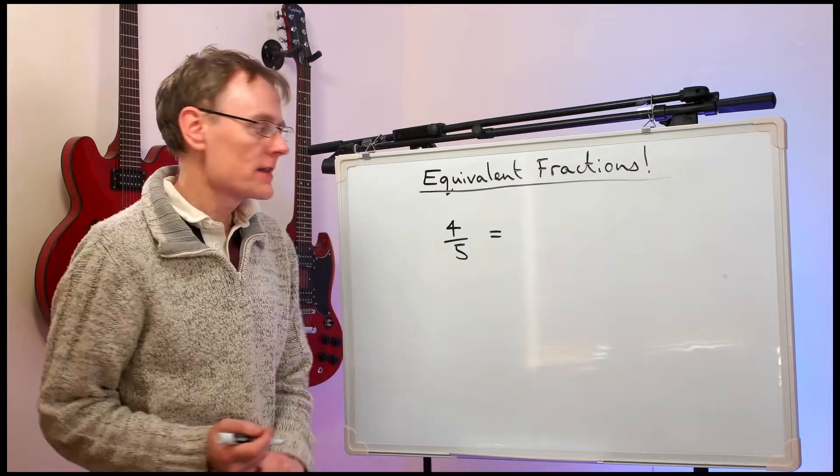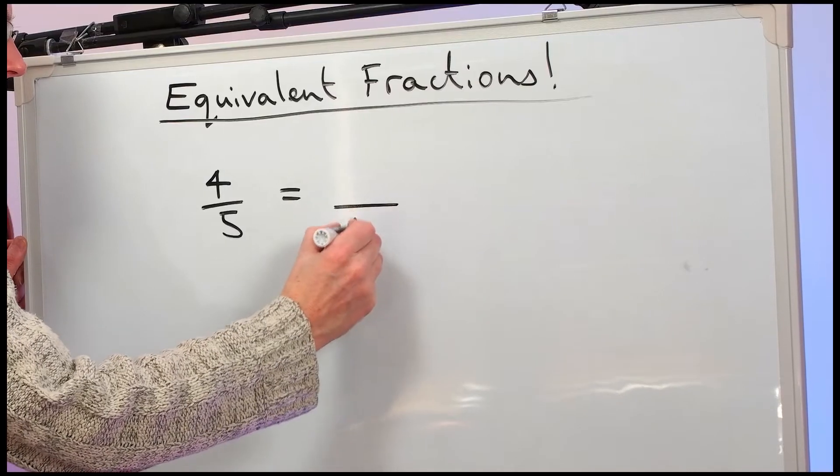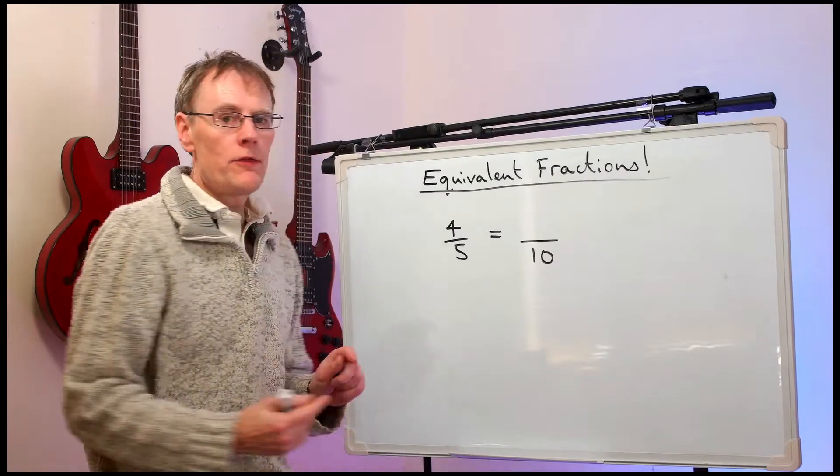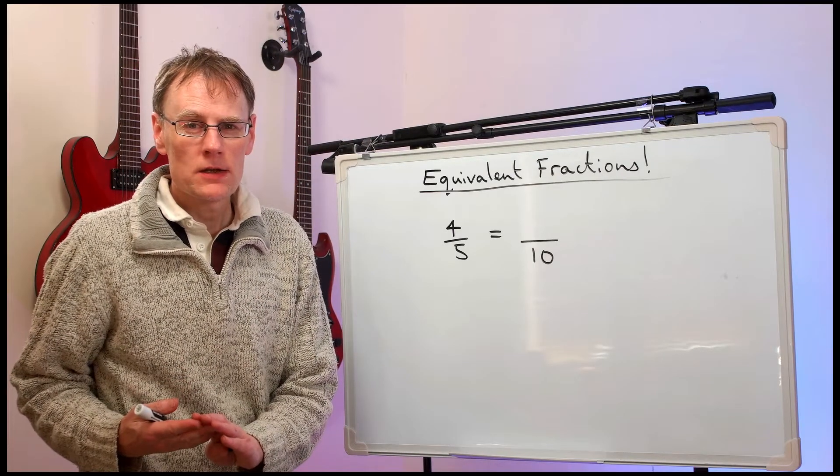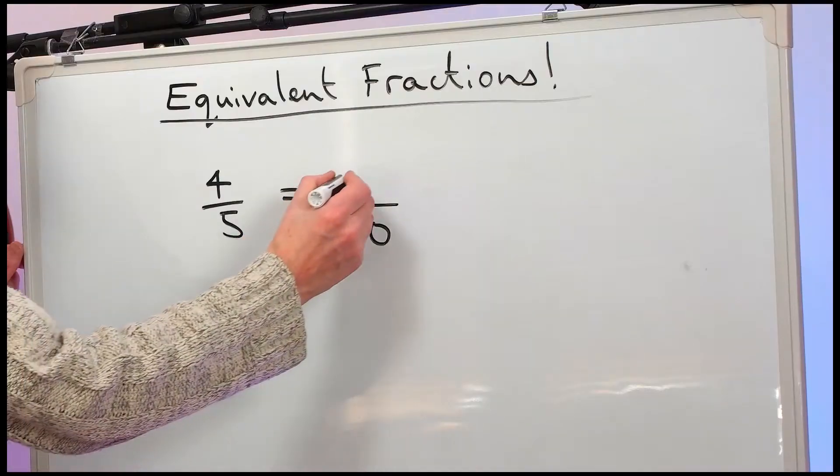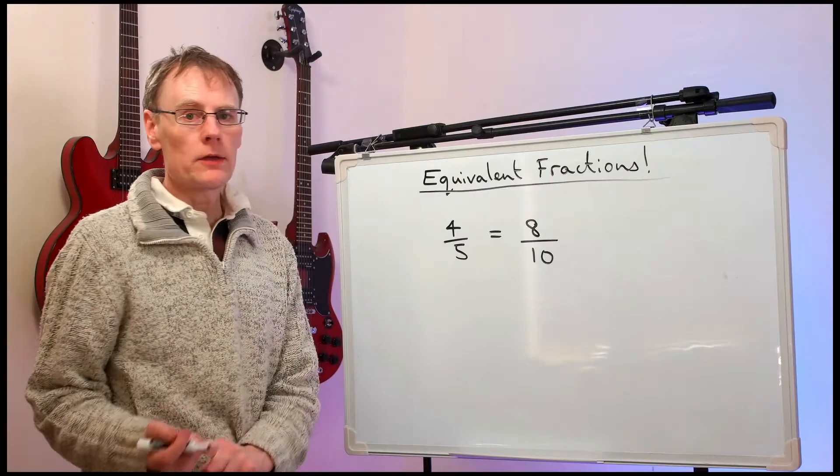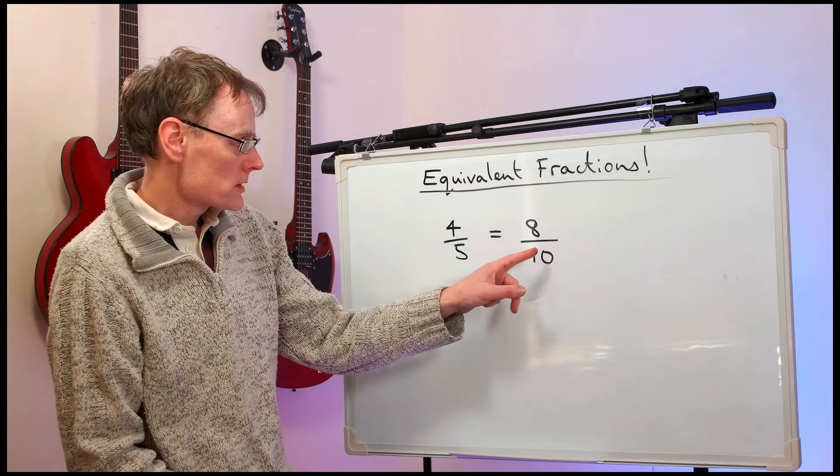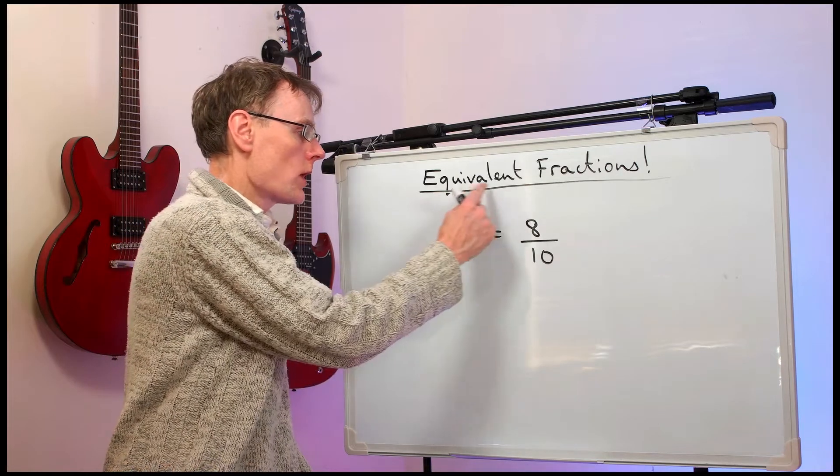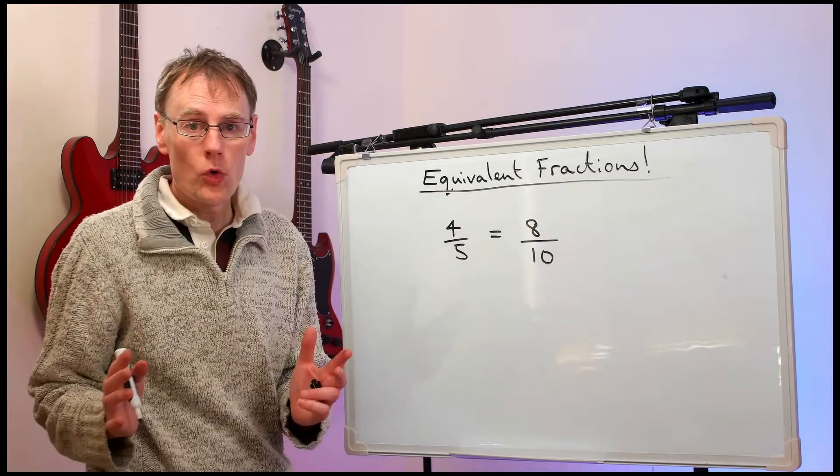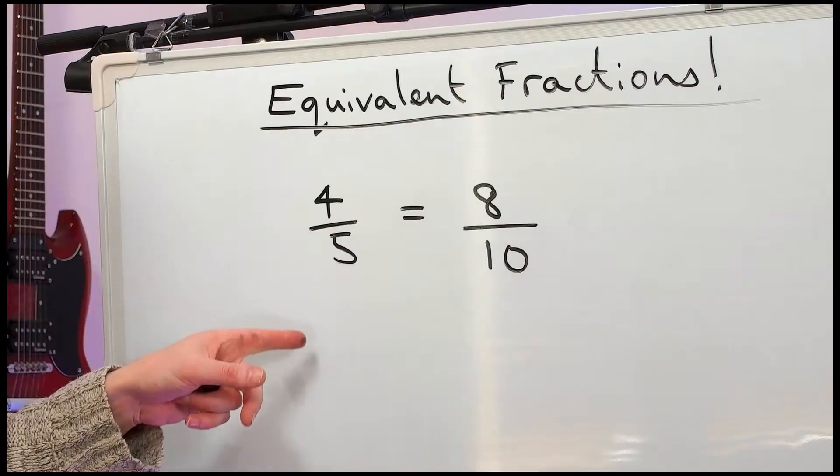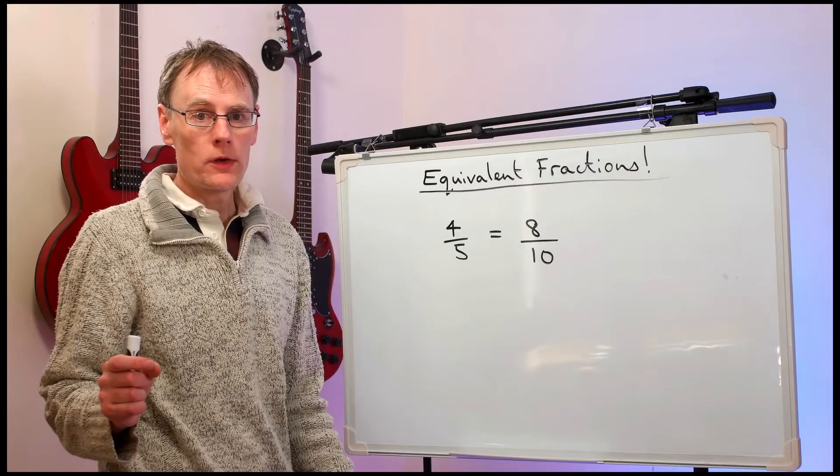Four-fifths is exactly the same as something out of ten. If you got four out of five in a test that would be just as good as getting eight out of ten in a bigger test. If the test were twice as big you should score twice as many to get the same score. They're the same number. They're both zero point eight.